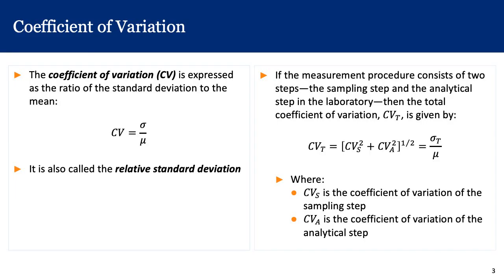The first way to describe measurement uncertainty is using a parameter called the coefficient of variation. The coefficient of variation Cv is expressed as the ratio of the standard deviation to the mean — Cv is sigma divided by mu — and it is also called the relative standard deviation.